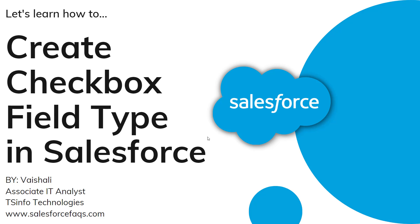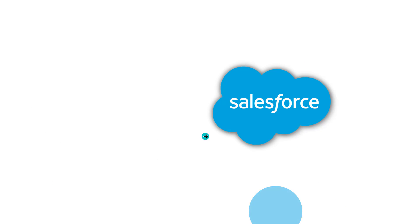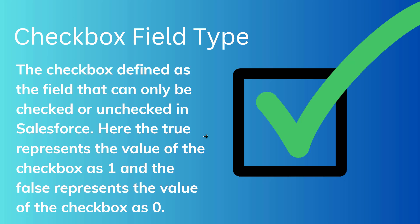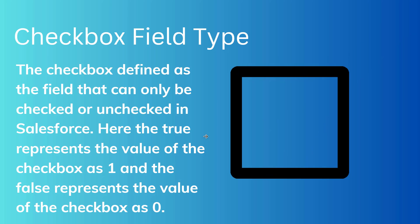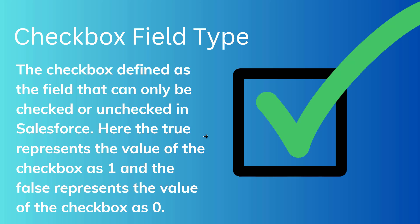Before we proceed to learn how to create it, we will first discuss what is checkbox field type in Salesforce. The checkbox field type in Salesforce is defined as the field that permits the user to select a single option, represented by a checkbox within the record. It is mainly used to specify yes or no, or true or false for unchecked or checked condition. It can only be checked or unchecked. The true value represents the checkbox as 1 and the false represents the checkbox as 0.